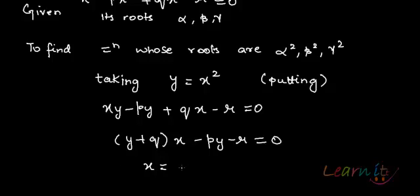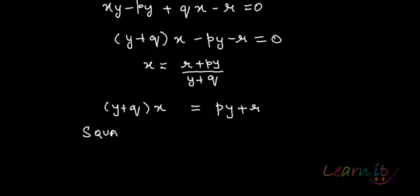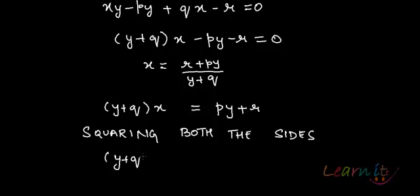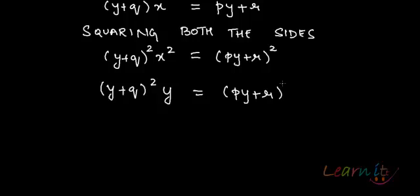So x becomes essentially (r + py) / (y + q). That's what my x is. So we have (y + q)·x = py + r. Squaring both sides, we will have (y + q)² · x² = (py + r)².